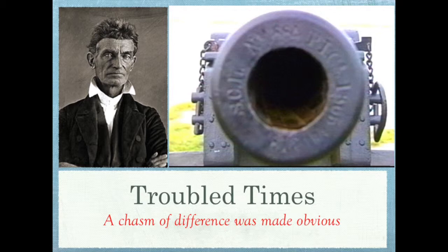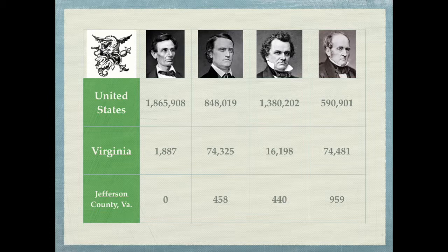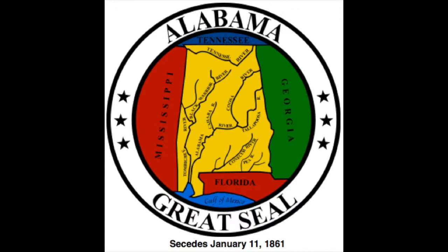A chasm of difference was made obvious to both Northerners and Southerners. Four candidates ran in the ensuing months for the presidency instead of the usual two because of the volatile political season, electing the Midwesterner Abraham Lincoln. Seeing they had lost the upper hand in Washington, most Deep South states seceded at once on the tragically mistaken assumption that Lincoln would not go to war to retain them.